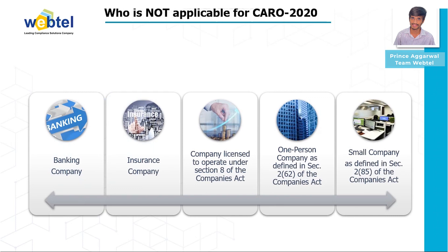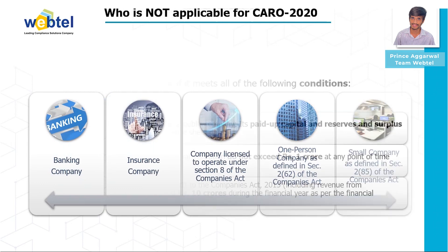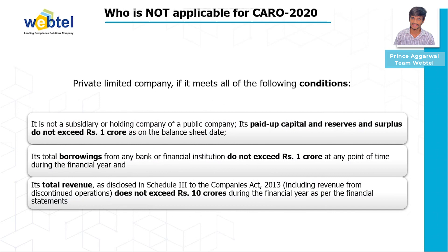CARO 2020 is not applicable to the following five companies. CARO 2020 is not applicable to a private company if it meets the following conditions: it is not a subsidiary, holding company, or public company; paid-up capital and reserves and surplus do not exceed 1 crore rupees as on the balance sheet date; borrowings from any bank or financial institution do not exceed 1 crore rupees at any point during the financial year; and total revenue does not exceed 10 crore rupees during the financial year as per the financial statements.